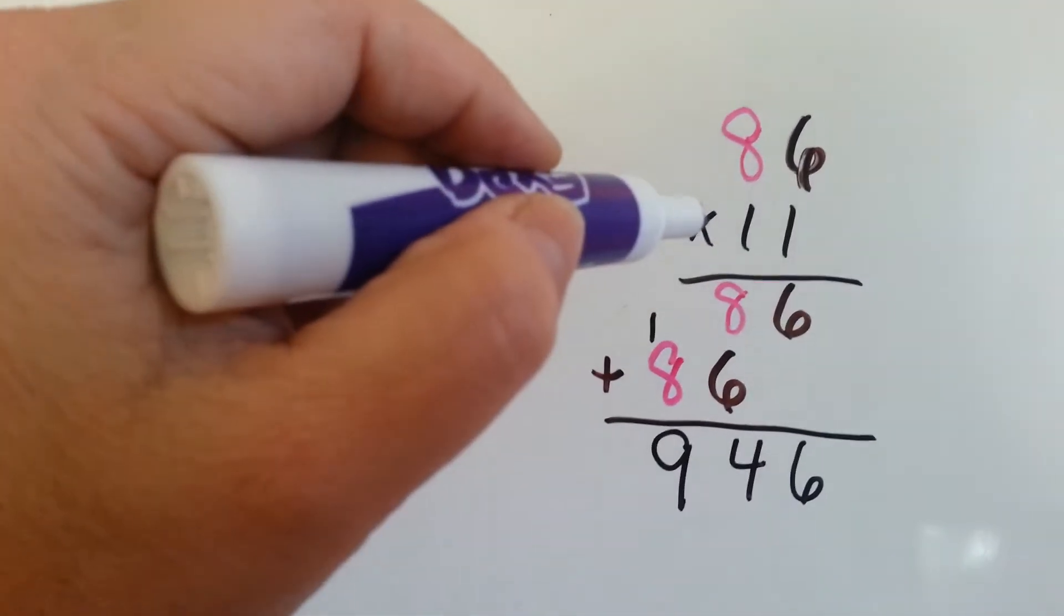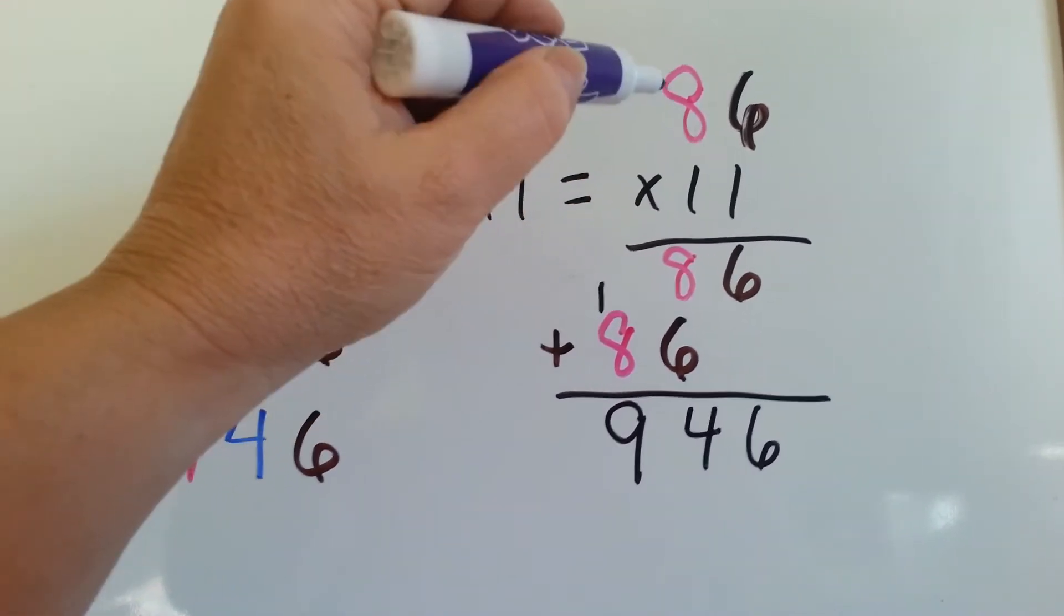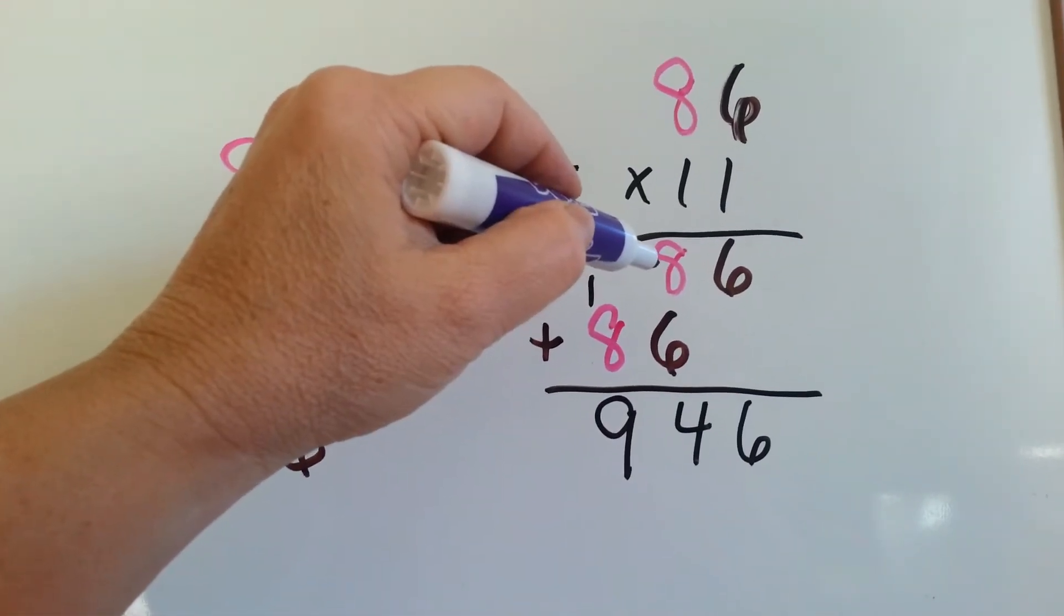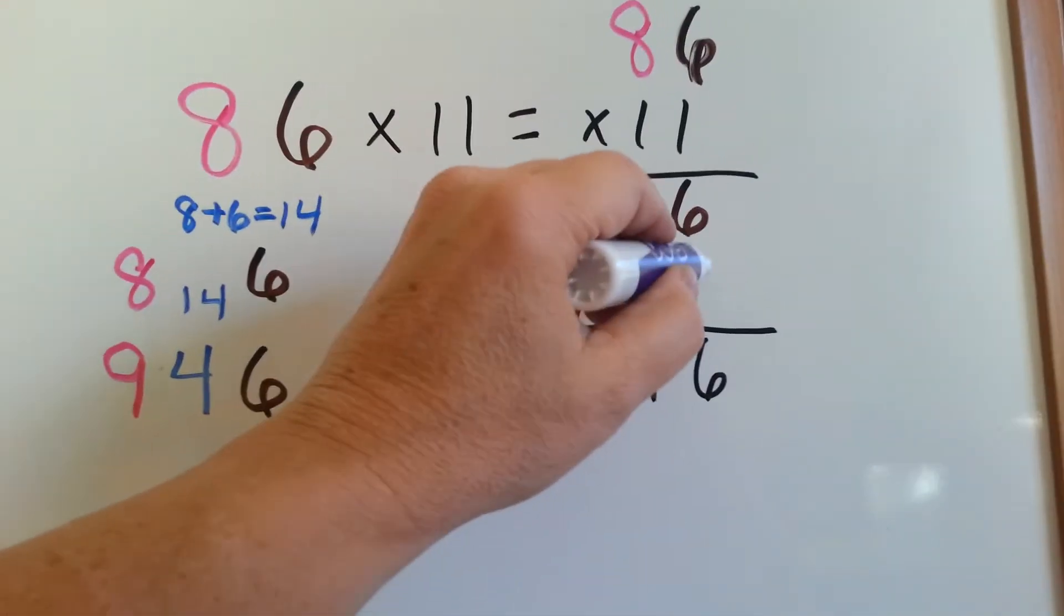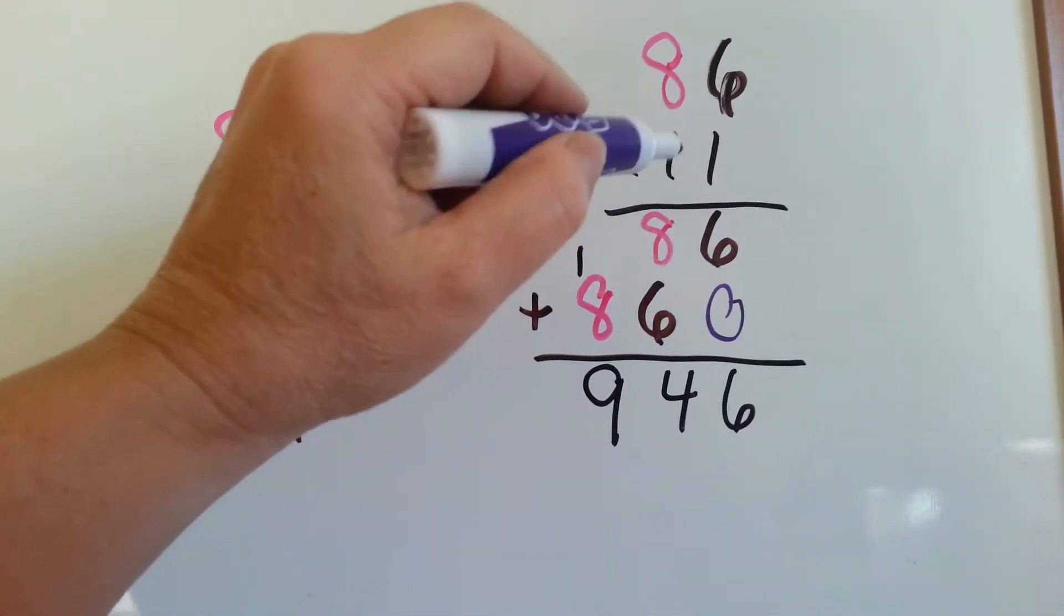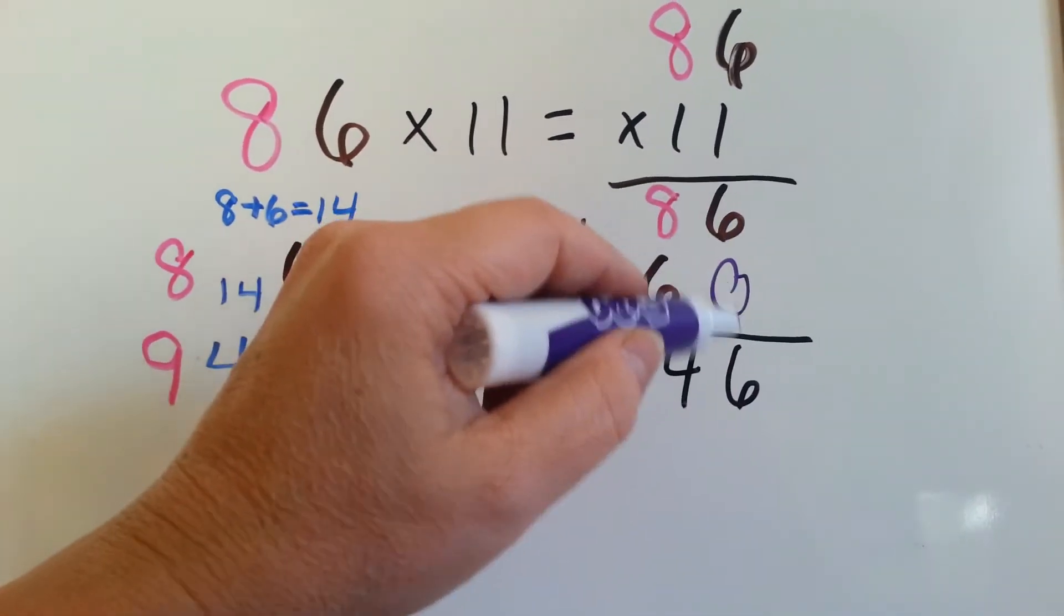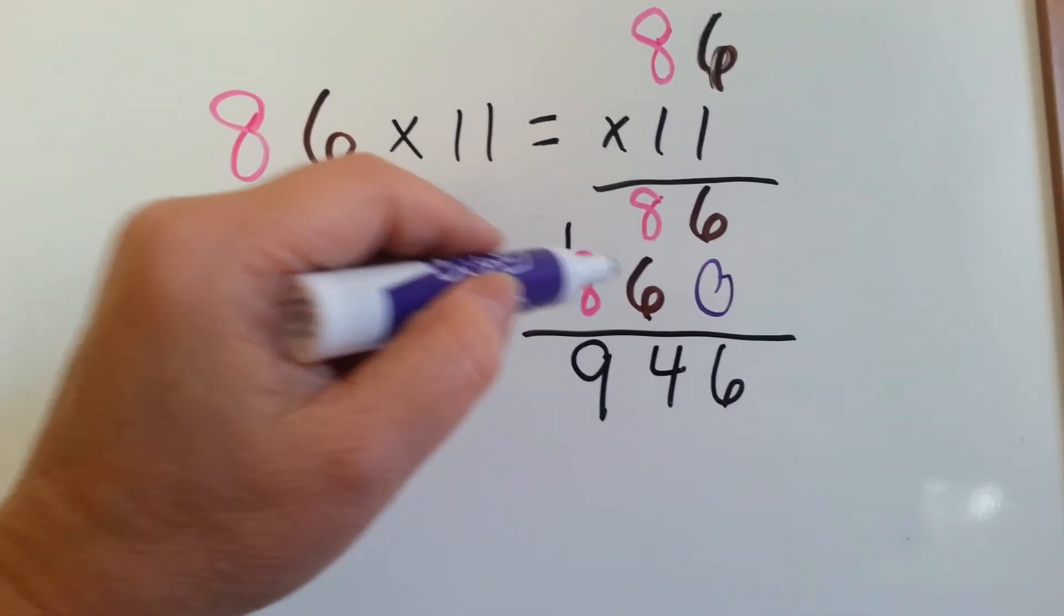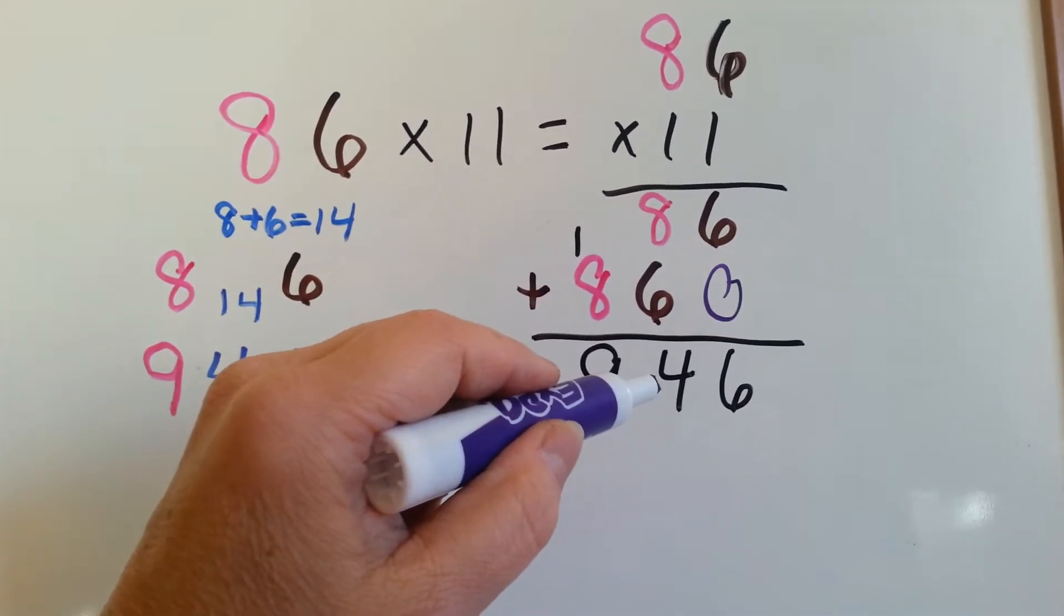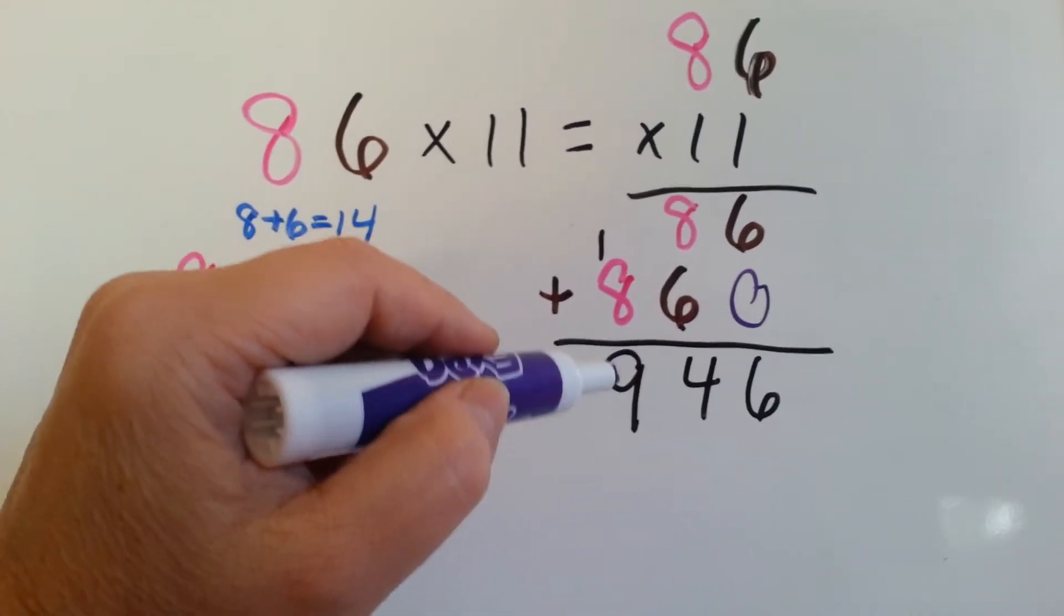86 times 11. 1 times 6 is 6. 1 times 8 is 8. Now it's this one's turn. We've got our placeholder here. 1 times 6 is 6. 1 times 8 is 8. Now we need to add them. 6 and 0 is 6. 8 and 6 is 14. Carry the 1. Put the 4 down. 8 plus 1 is 9. 946.